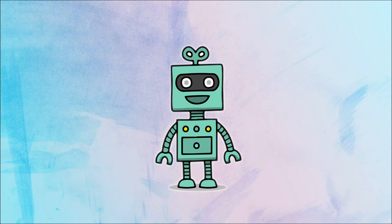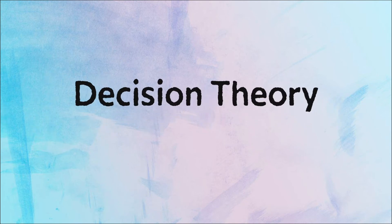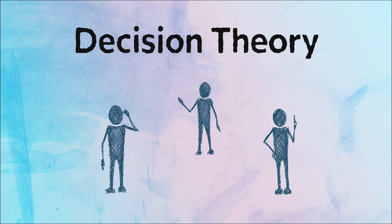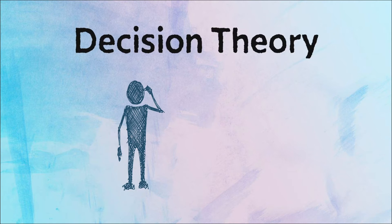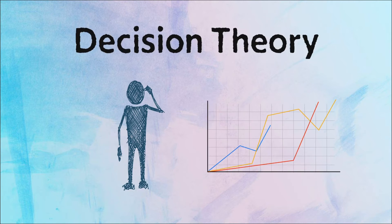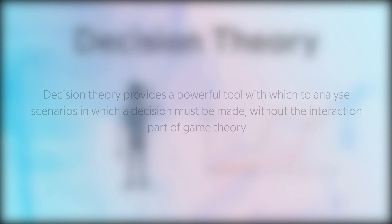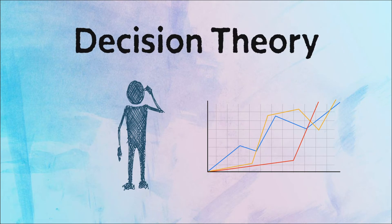Before we can get to that, there is one more concept we need to tackle — a very close relative of game theory: decision theory. Decision theory is a study of how a player can maximize his or her expected outcome in situations where there are no other decision-making players. It is more statistical than mathematical. Overall, decision theory provides a powerful tool with which to analyze scenarios in which a decision must be made, without the interaction part of game theory. It's about a decision, not the game.